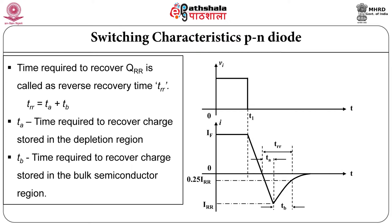T_RR consists of two time constants as shown in the timing waveform. The first is T_A, from zero crossing to peak value of reverse current. From peak reverse current to 25 percent of the peak reverse current, that time is T_B. Time T_A is due to the time required to recover charge stored in the depletion region. Time T_B is required to recover the charge stored in the bulk. T_A plus T_B equals the reverse recovery time.